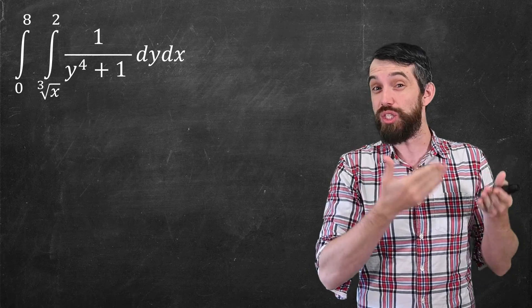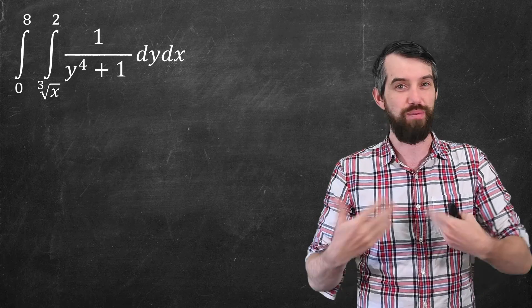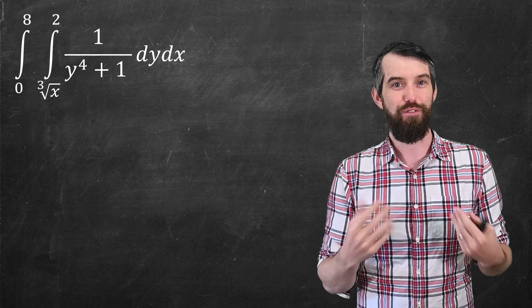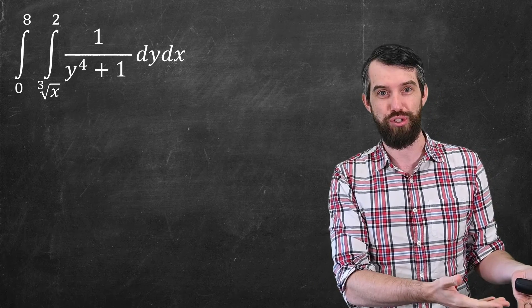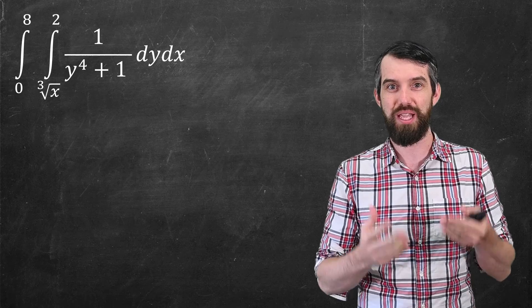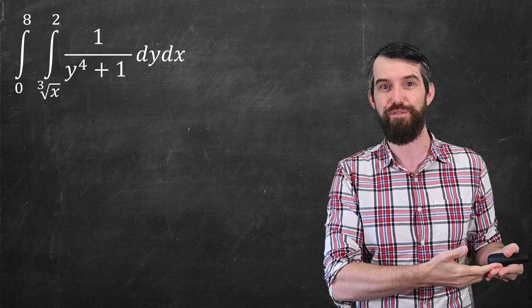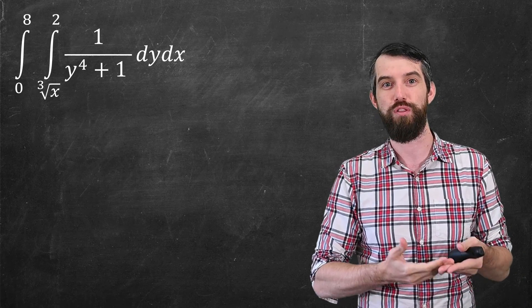If it was 1 over y squared plus 1, I could integrate that and get arctangent. If it was, say, y cubed over y to the fourth plus 1, I could do a u substitution. But it's not obvious to me that there's a method to integrate with respect to y, the function 1 over y to the fourth plus 1.